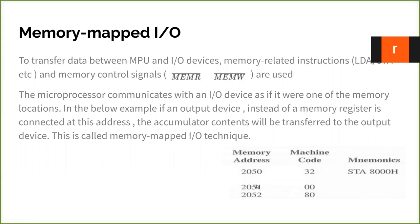So you can use LDA — load the accumulator — and there will be a 16-bit address, which means the accumulator will be loaded with the data from that memory address. This can be used as equivalent to the IN instruction. If you use IN with a port address, the one connected to the device is connected to the port address. The data will be read. The same thing you can do with LDA if the particular address is a 16-bit address.